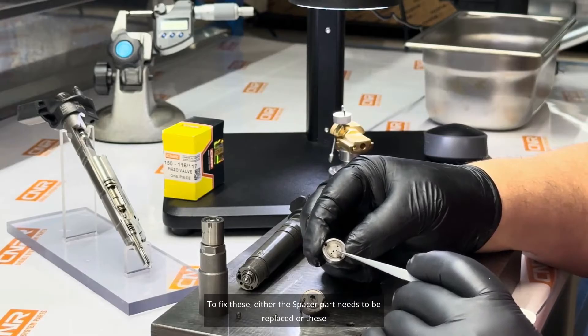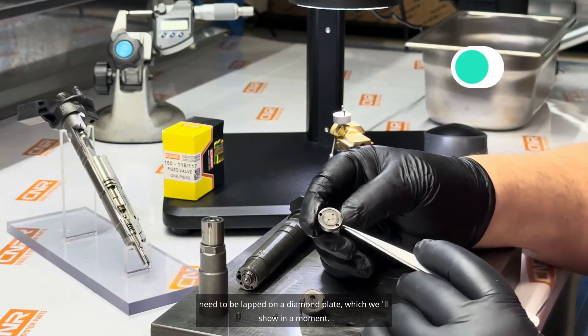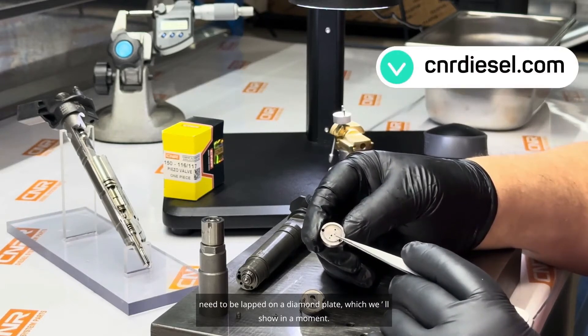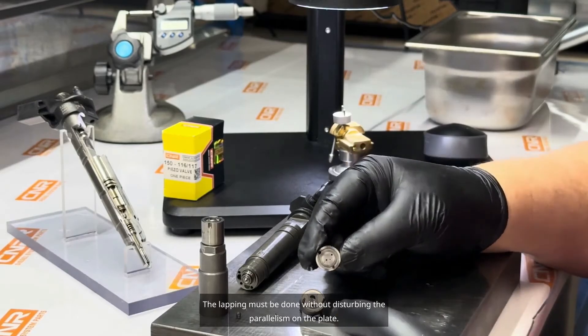To fix these, either the spacer part needs to be replaced, or these need to be lapped on a diamond plate, which we'll show in a moment. The lapping must be done without disturbing the parallelism on the plate.